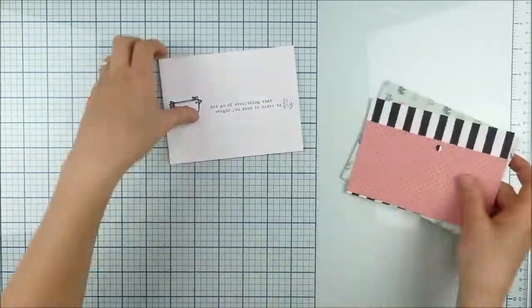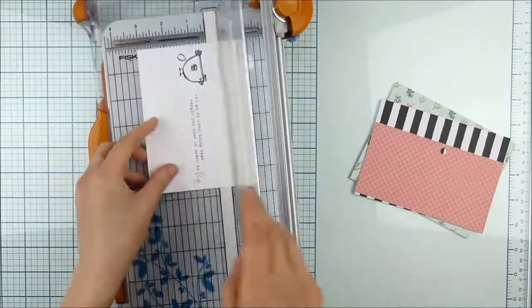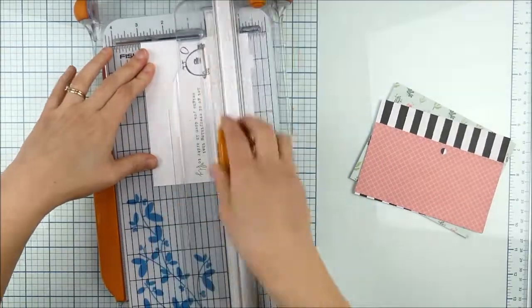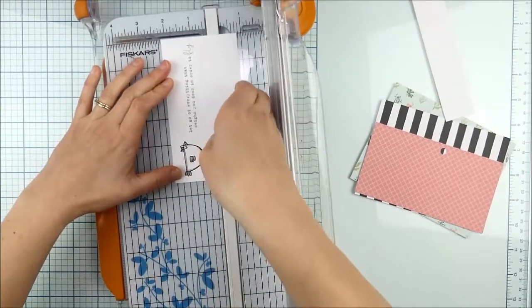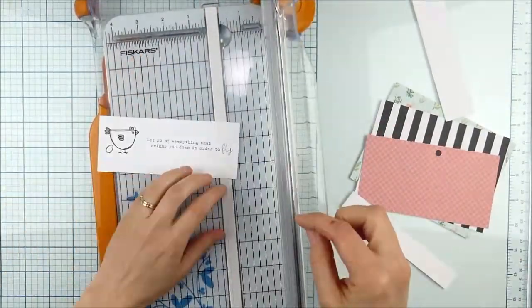So we're going to do some paper layering with some pretty pattern papers and also a fun little embellishment cluster. I have that image and sentiment on a panel of cardstock that is the width of an A2 card, so five and a half inches, and I'm trimming it down a little.